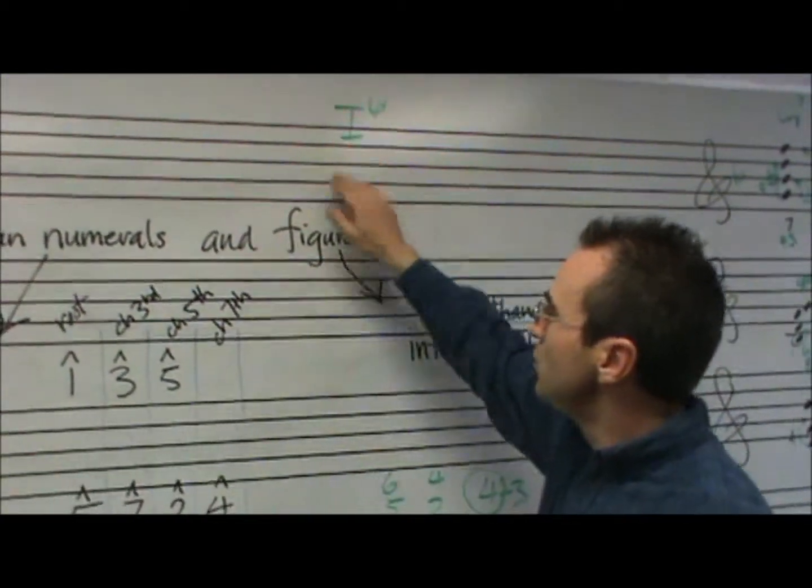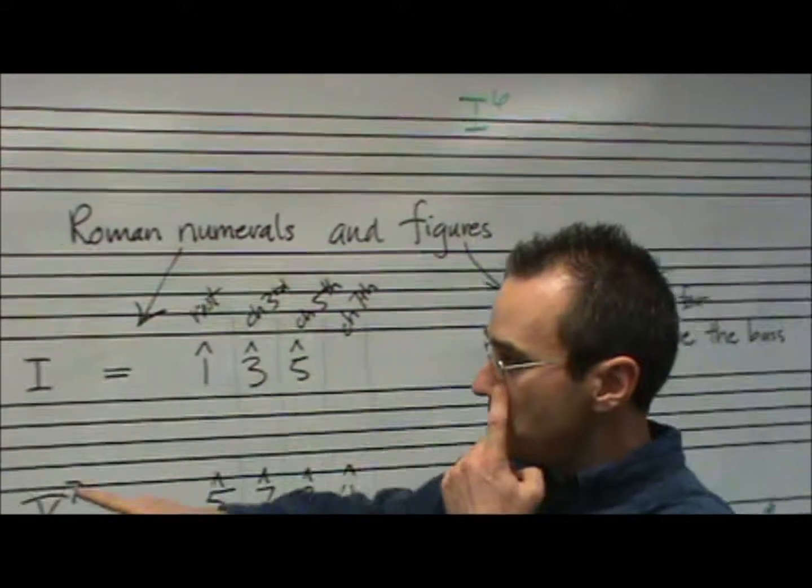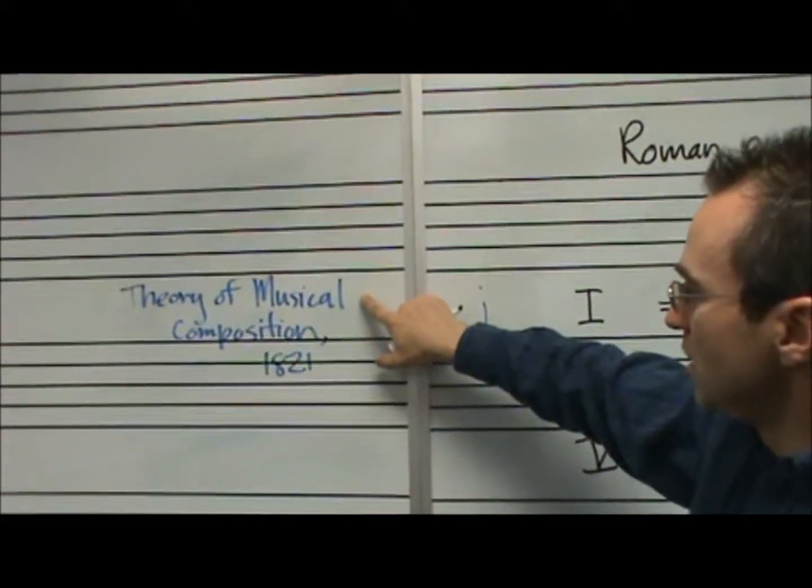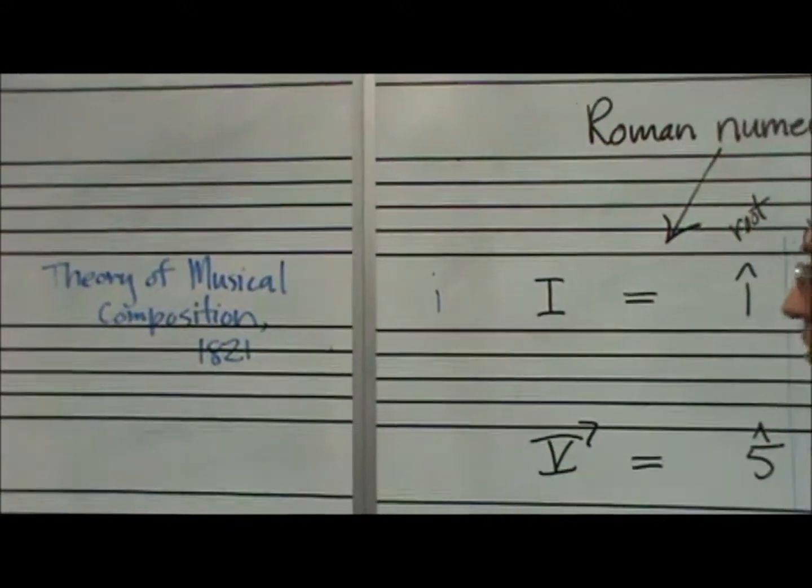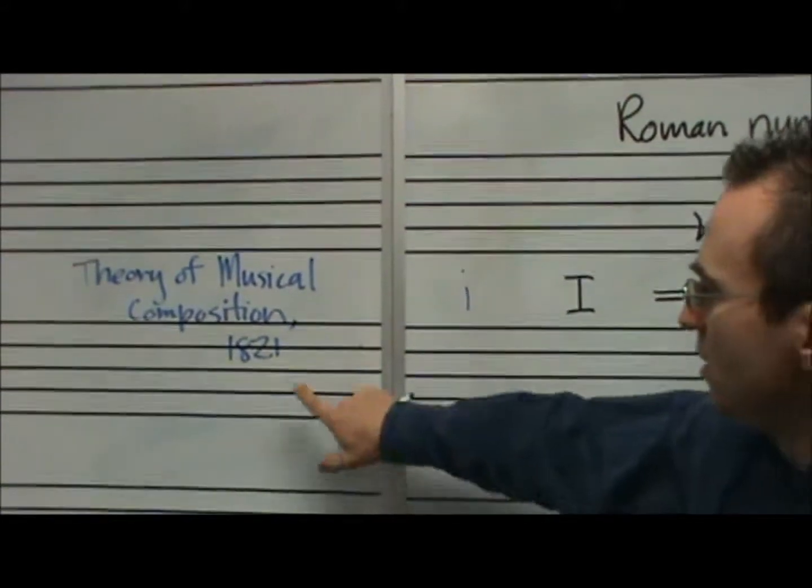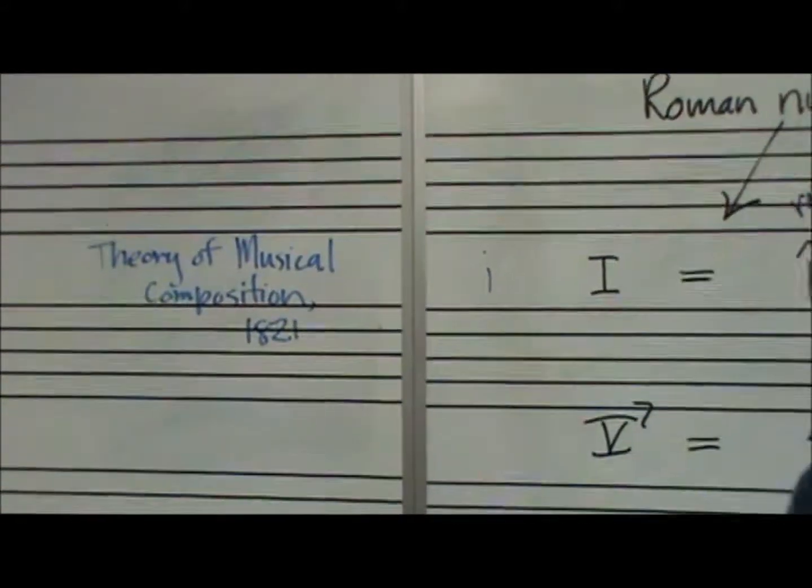When did this idea of Roman numerals come in? Well, that was with this big treatise, Theory of Musical Composition, from Gottfried Weber. He wrote in 1821. Here's his picture here.